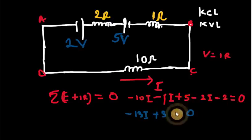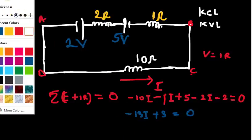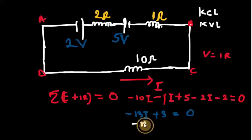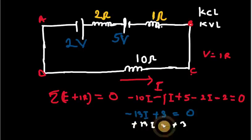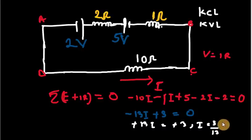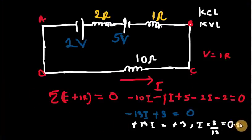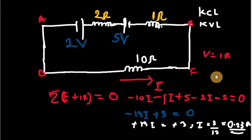Making I subject of the formula: minus 13I equals minus 3. The negatives cancel, so I equals 3 over 13. Dividing this gives 0.23 ampere. The current that flows through the circuit is 0.23 ampere. We were able to find this using Kirchhoff's voltage law applied to this single loop.